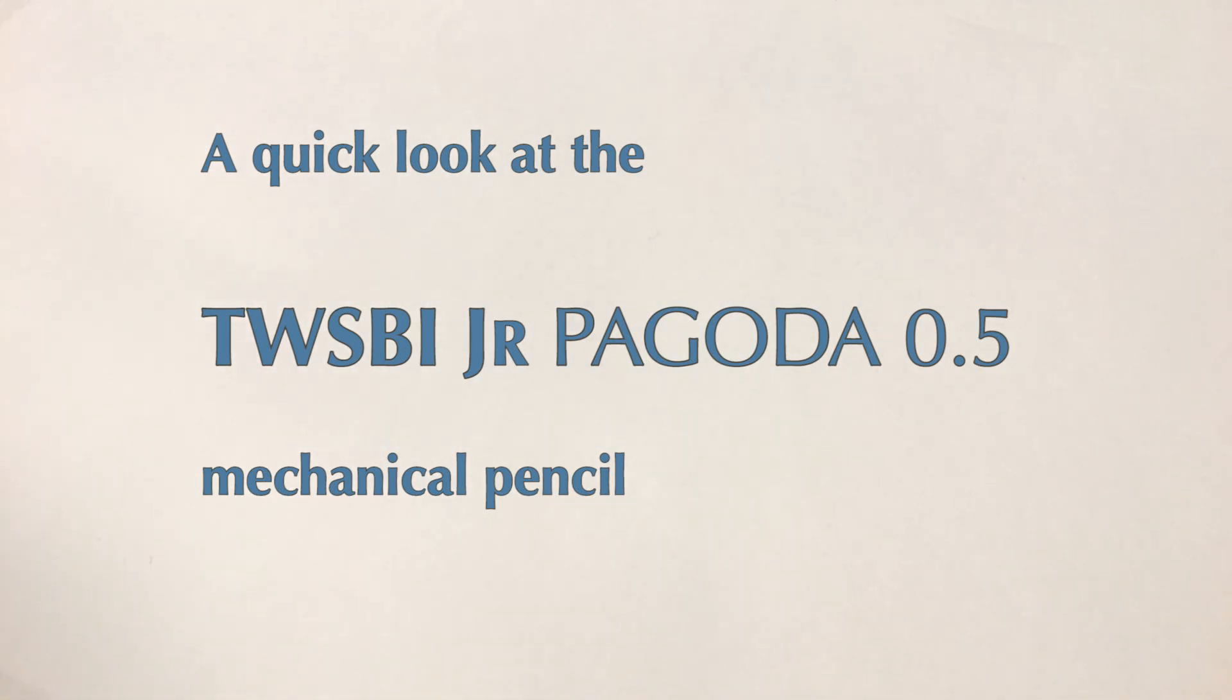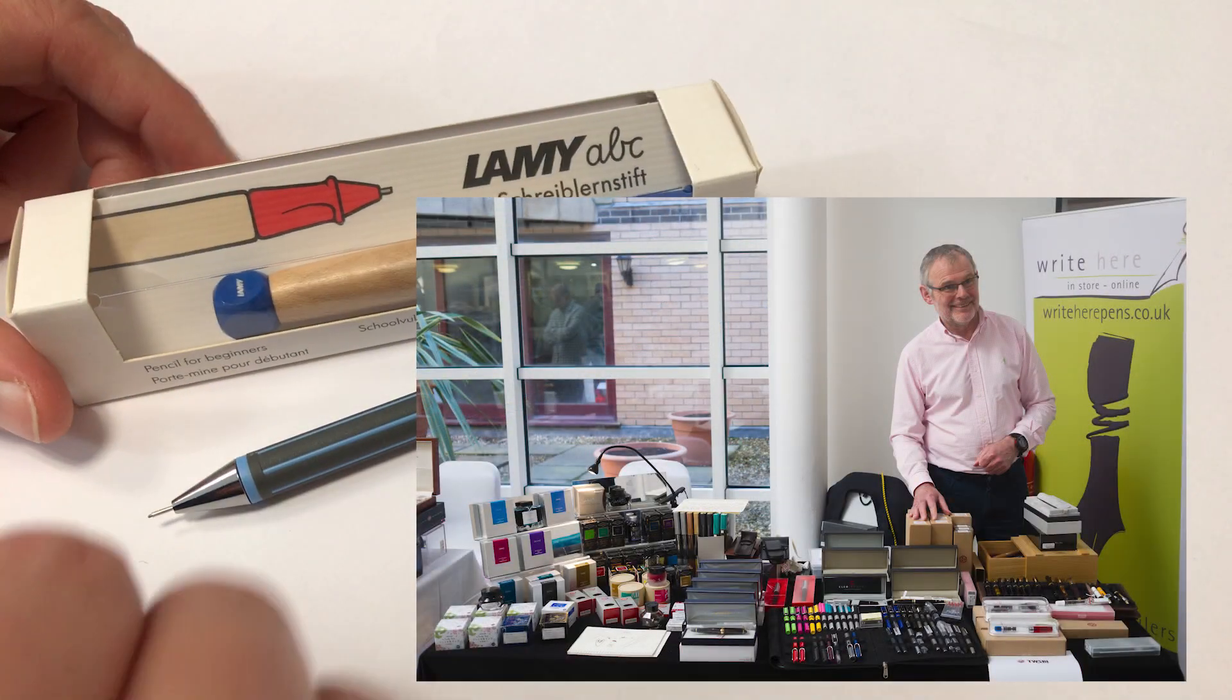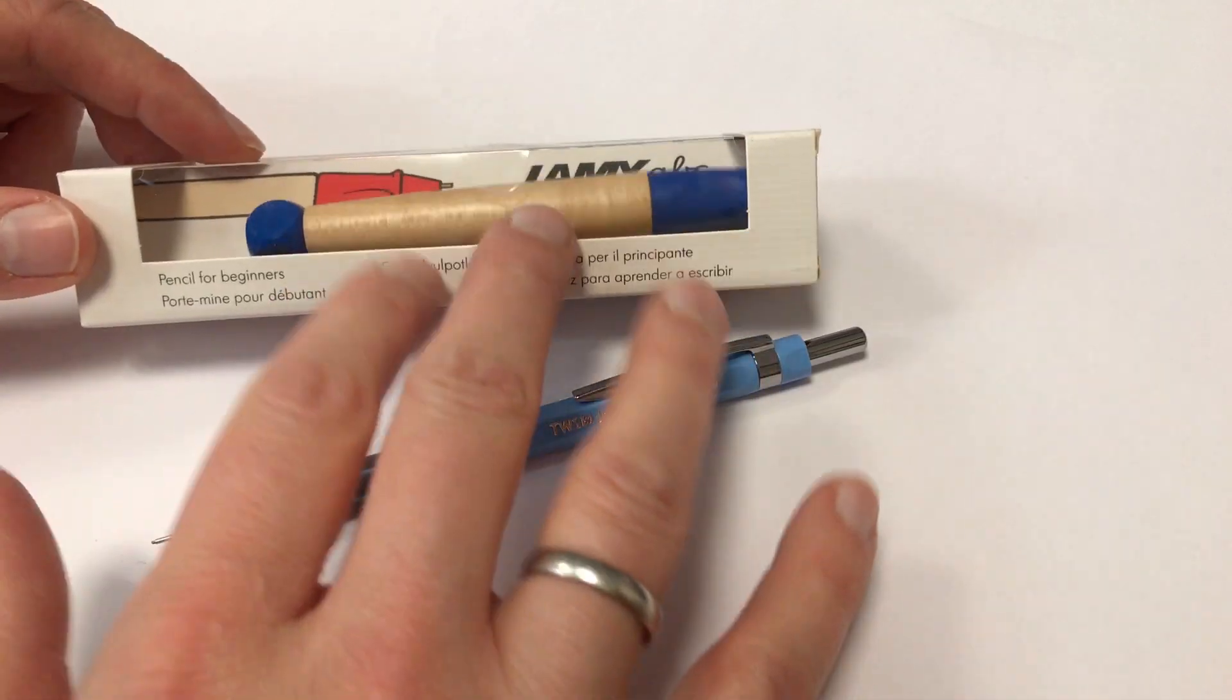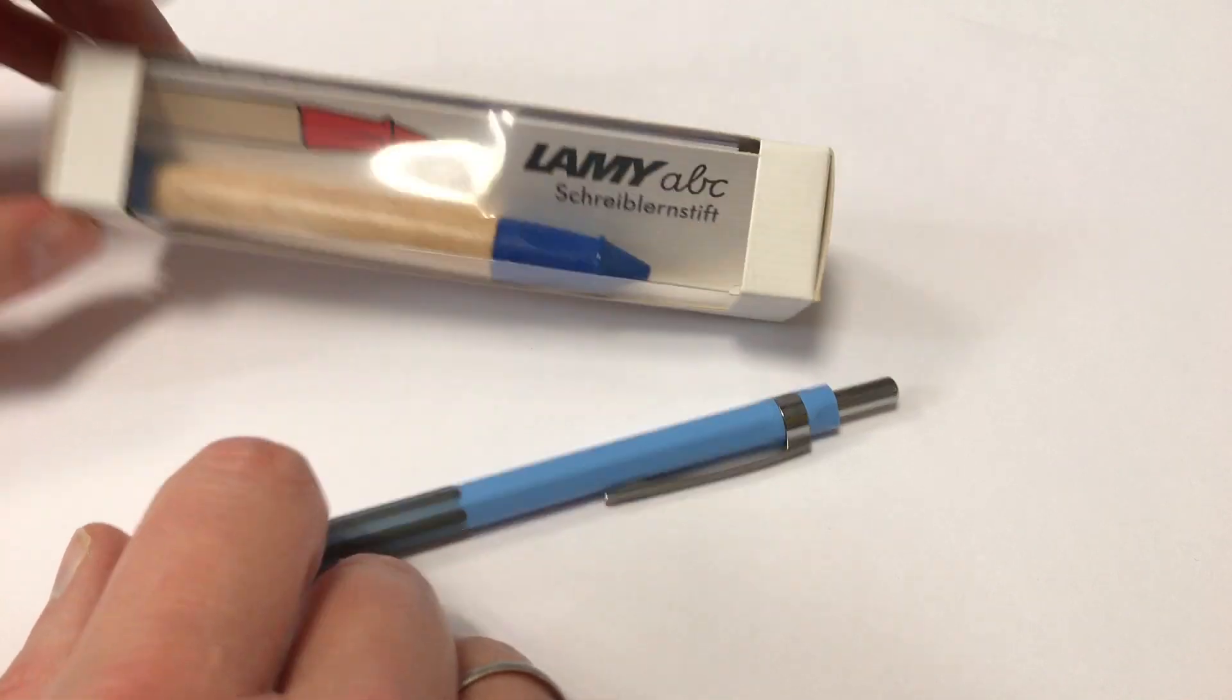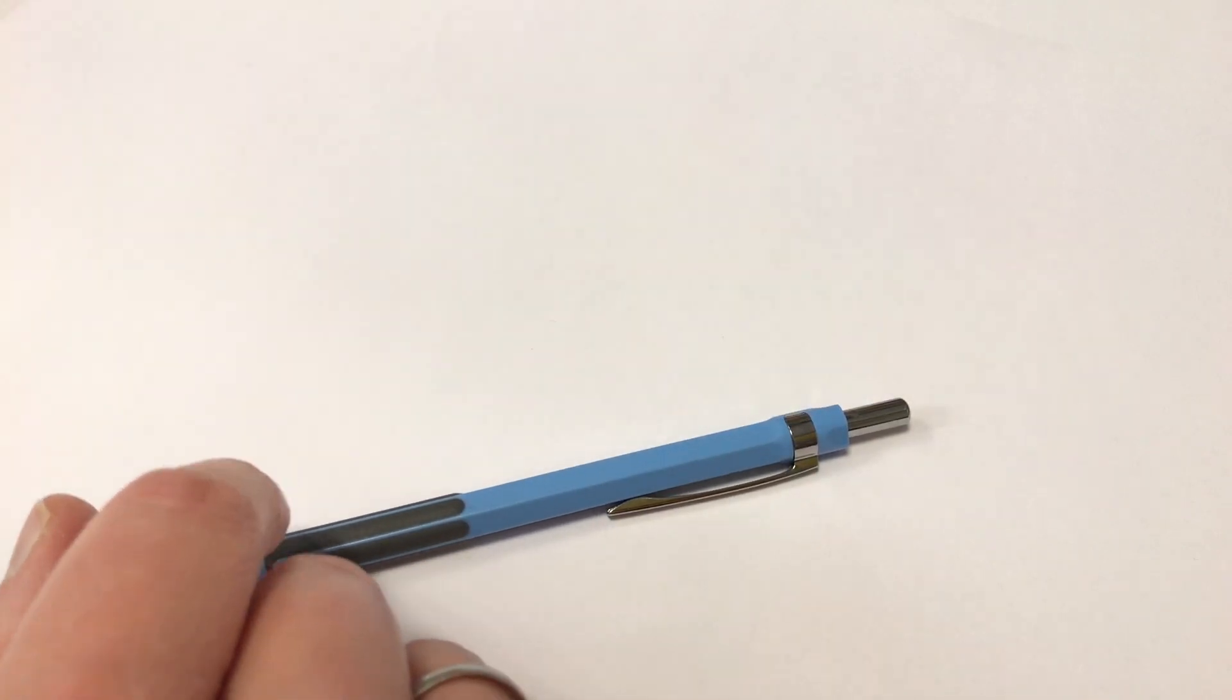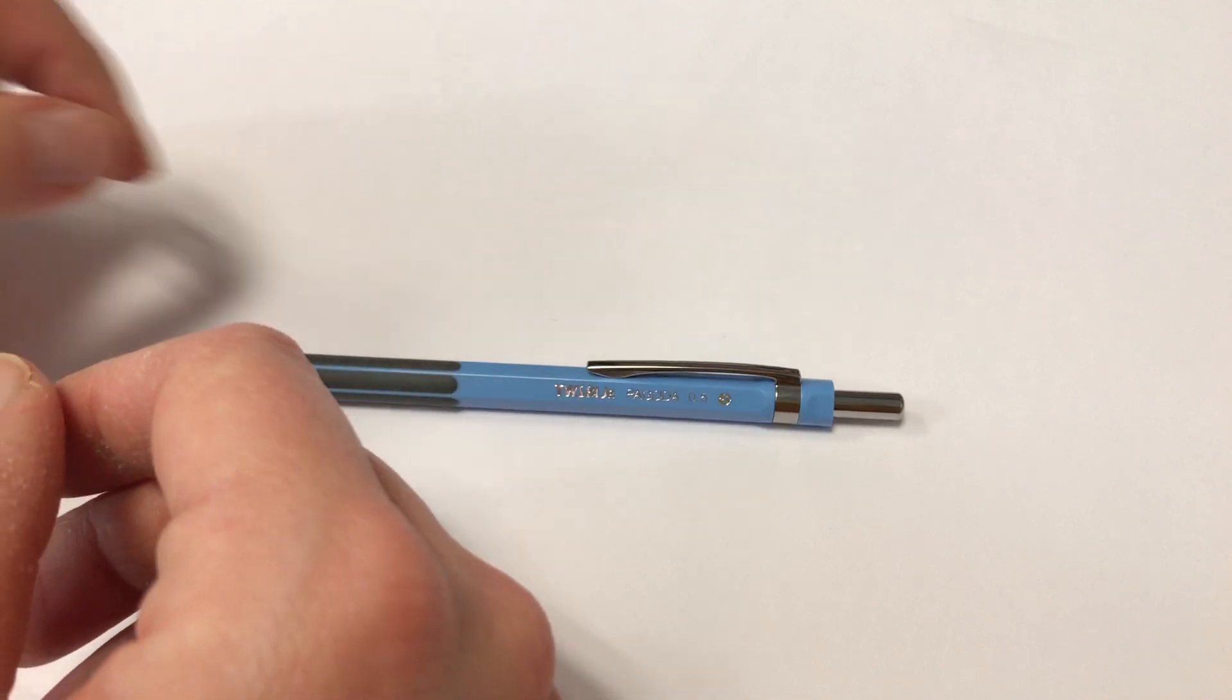Hello and welcome to another Plystift video. Today I want to have a look at some pencils I got from John Hall from Right Here, and I got a few weeks before I got to send the stuff back. Certainly the Lamy ABC. I had the fountain pen version of this pen for many years, but I hope I can look at the mechanical pencil version soon. He also sent the TWSBI Junior Pagoda in 0.5, so I want to have a look at this pencil as well.